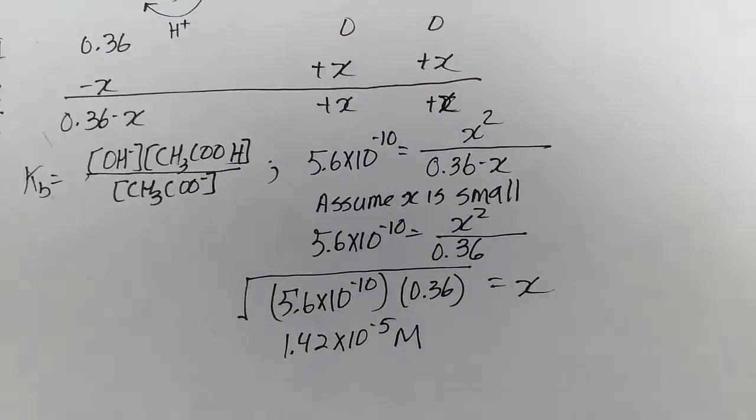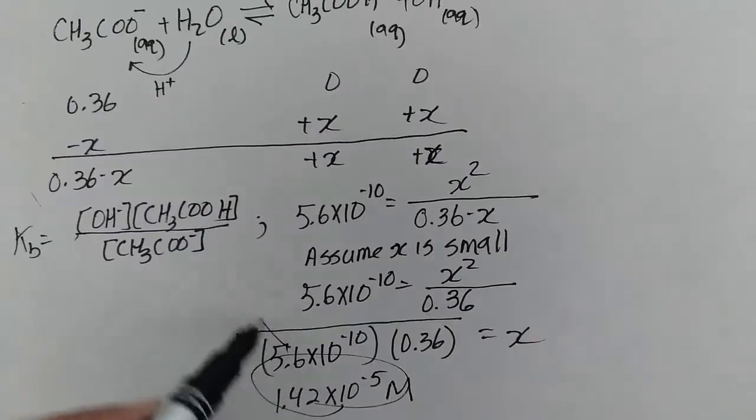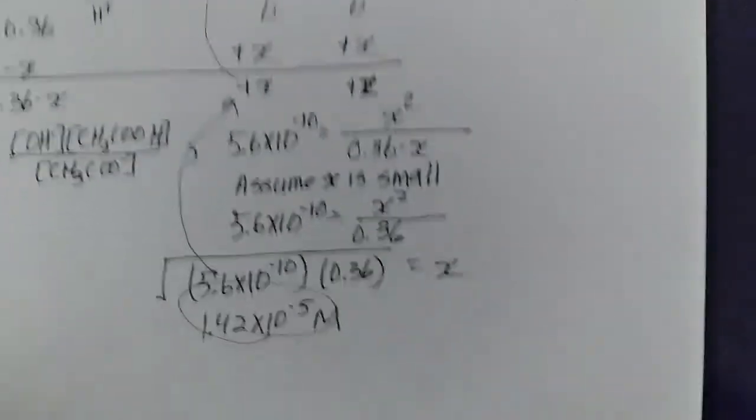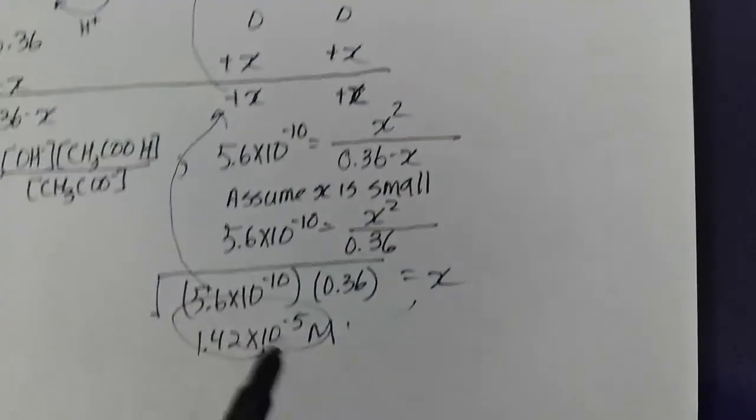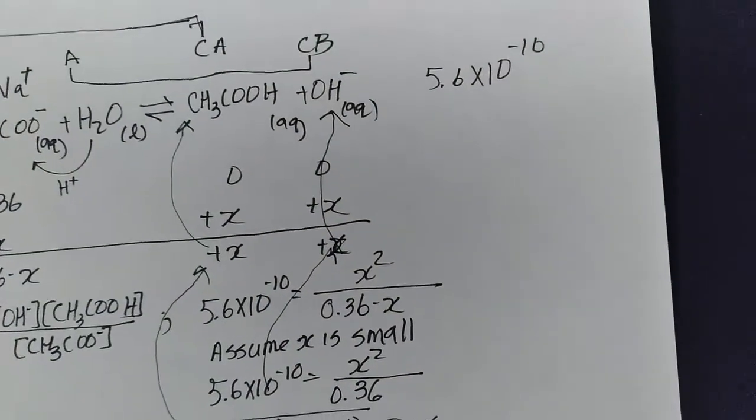Now this is where you want to add the units of molarity. That's our x, which really is the concentration of acetic acid. This is our x, which really is the concentration of our hydroxide ion.